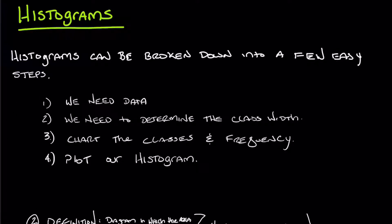Right here you can see on the screen we have histograms and we can really break this down into a few easy steps. First of all, we need data, right? So it can be data from a machine, it can be data taken from measuring bottle caps if you're producing bottle caps. Whatever that data is, you need data. The second thing you need to do is you need to determine the class width. The third thing is chart the classes and frequency. This is something you don't really have to do, but I like to do it because it helps to keep everything nice and organized. And the last thing you need to do is to go ahead and plot that histogram.